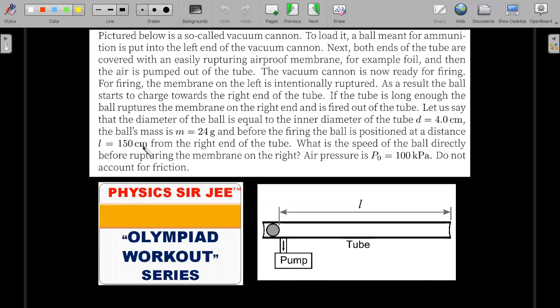What is the speed of the ball directly before rupturing the membrane on the right? Air pressure atmospheric is equal to 10 power 5 pascals and do not account for any friction in this problem. So let's move ahead to try to see what's the actual concept behind this vacuum cannon, where the bullet is being fired using just atmospheric pressure.